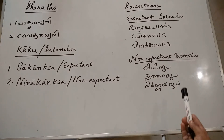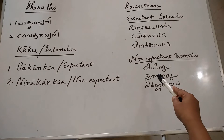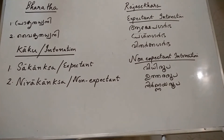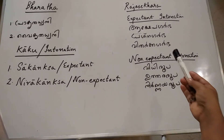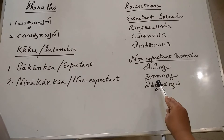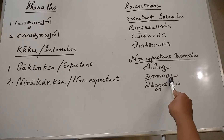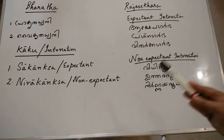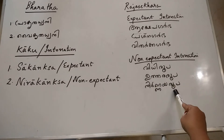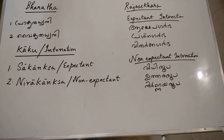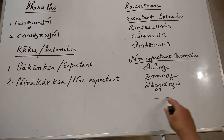The three classifications of non-expectant intonation are: Vidirubha, Uttararubha and Nirnayarubha. Vidirubha is when you are making a plain statement — for example, 'I am a doctor.' That is Vidirubha intonation. Uttararubha is when you are giving an answer — for example, 'Yes, I am coming with you.' And Nirnayarubha is when you are asserting a decision strongly — that non-expectant intonation is called Nirnayarubha.